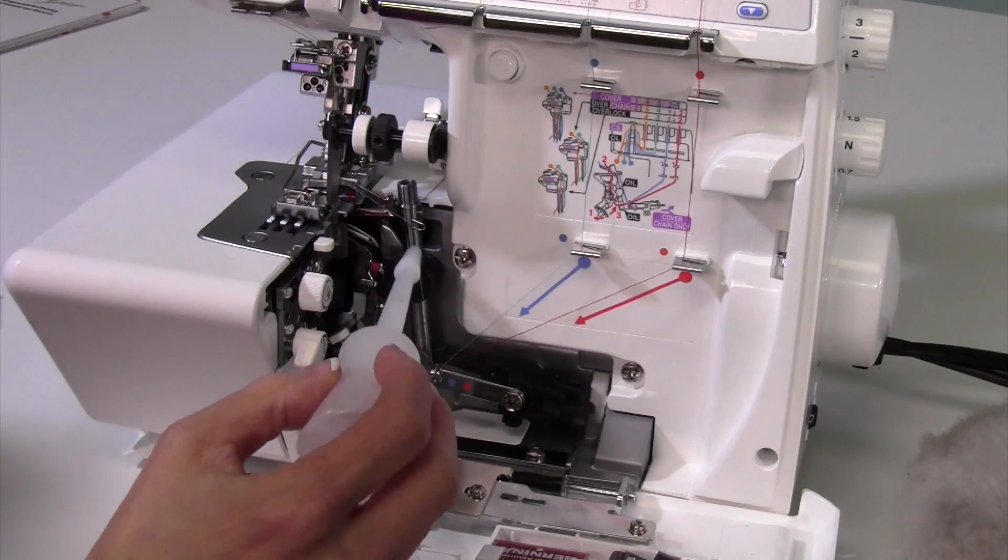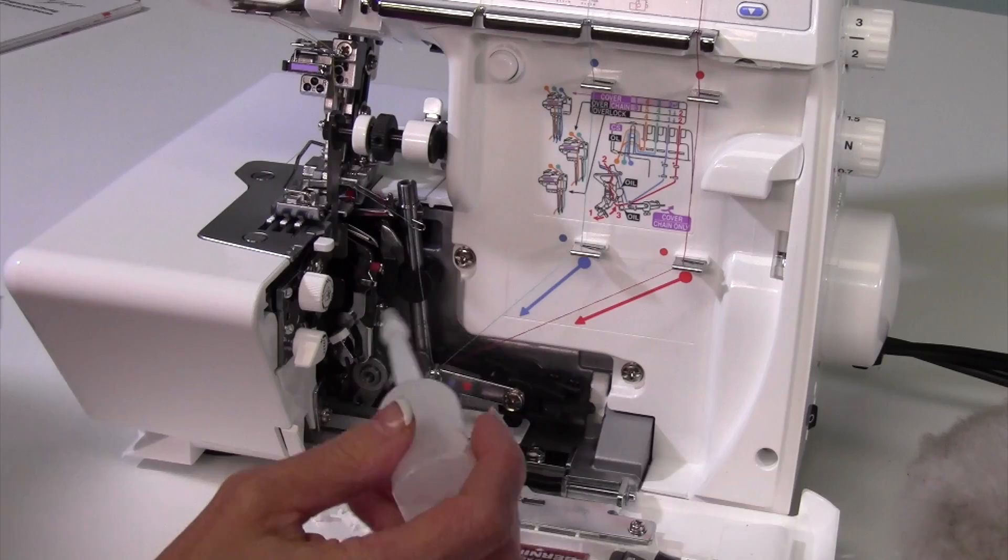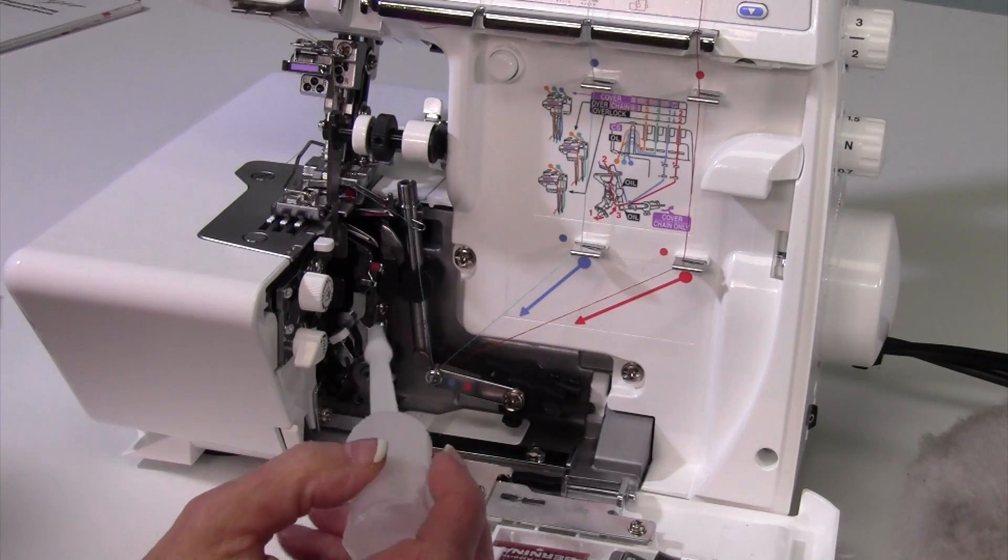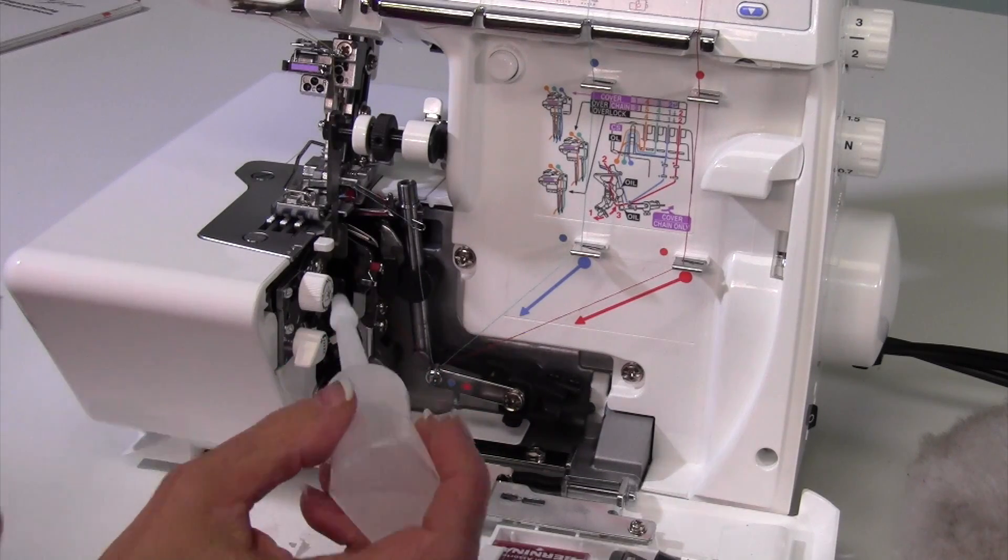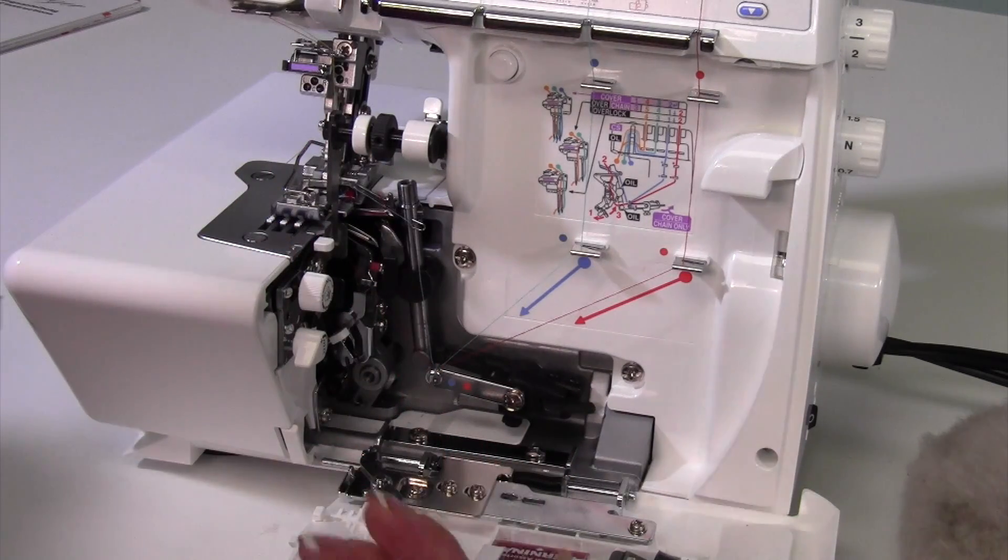You can just run it a little bit and that will lubricate that whole area. Next time you clean that lint out, the oil has been absorbed by the lint. That's why it's a constant process of cleaning and oiling.